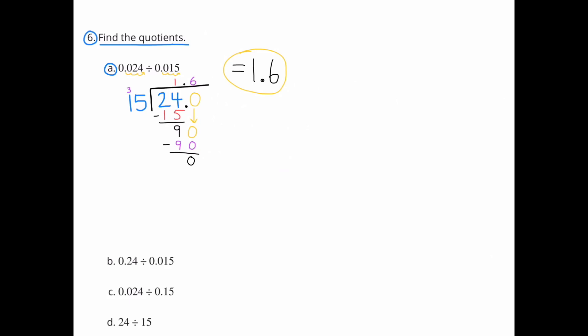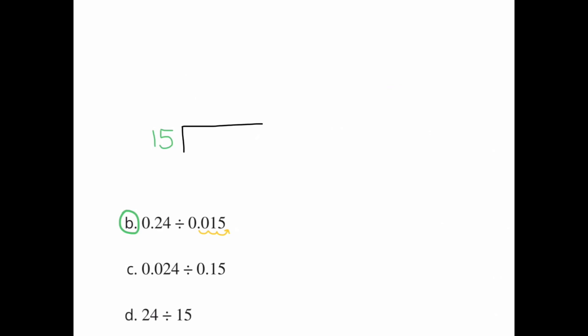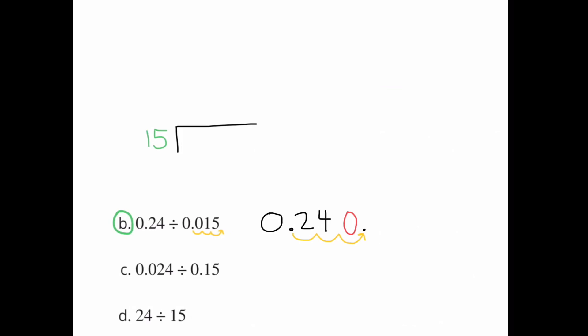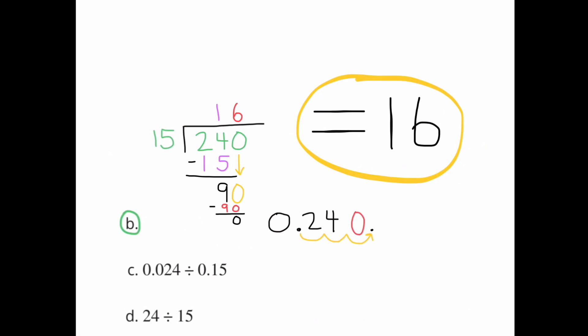Question 6: Find the quotients. A: 24 thousandths divided by 15 thousandths is the same as 24 divided by 15, which equals 1 and 6 tenths. B: 24 hundredths divided by 15 thousandths — this is the same as asking how many times 15 goes into 240, by making both values a thousand times bigger by moving the decimal three places to the right. 240 divided by 15 equals 16.